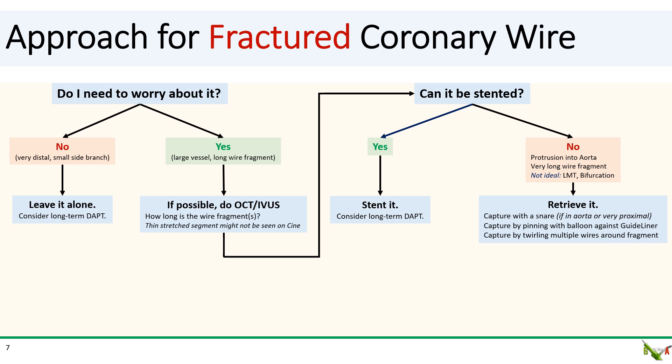If you cannot stent over the wire fragment, then you're going to need to attempt to retrieve it. Retrieving wire fragments from the coronary is usually quite difficult — definitely easier said than done. There are a few techniques. First, if the wire segment is very proximal in the left main, in the proximal LAD, or in the proximal RCA, you can attempt to capture it using a snare, usually a gooseneck snare.